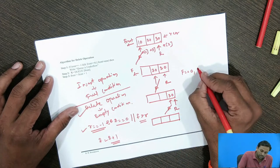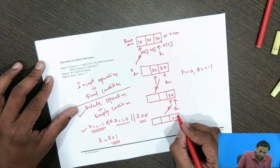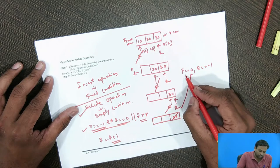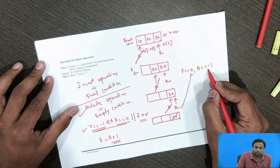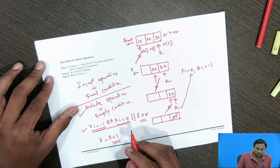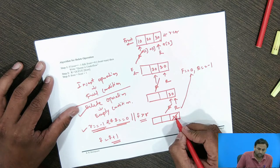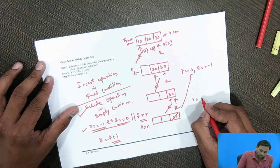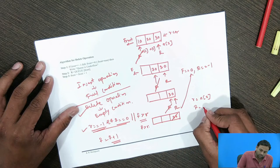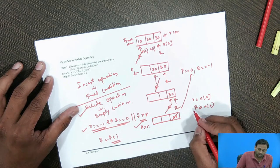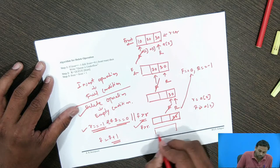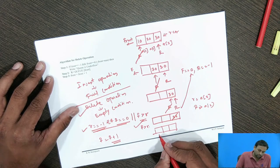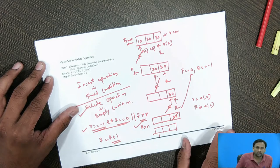After deleting all elements, front is initialized to 0 and rear is initialized to minus 1. When deleting 30, the condition front > rear becomes satisfied because front ends up greater than a[2]. This means the queue is now in an empty position, so the pointers are re-initialized: front = 0 and rear = -1. That is the delete operation.